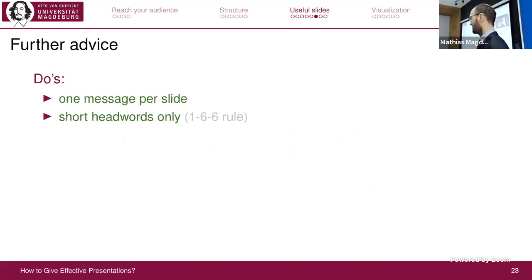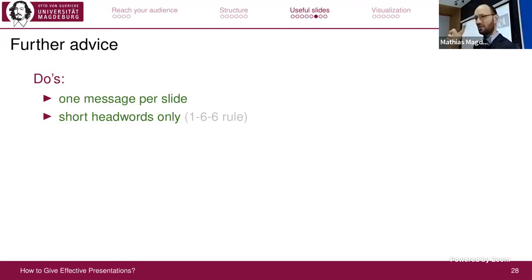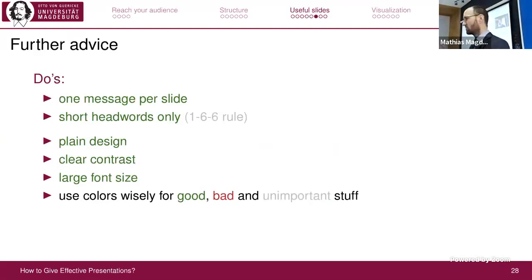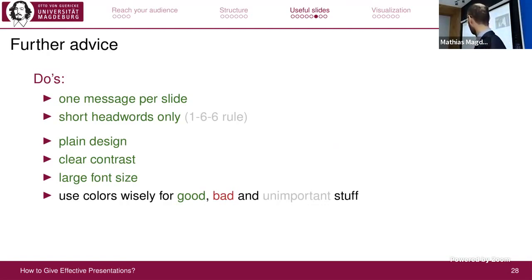Some further advice: use one message per slide — one important piece of information, not too many. Use pictures or short keywords only. There's the one-six-six rule: maximum six keywords per slide, each keyword consisting of maximum six words. Don't use overly fancy design — keep it plain. Ensure good contrast, large legible text. Use colors wisely: green for good things, red for bad, gray for less important.